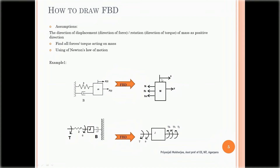For mass M, the force is applied in one direction and displacement X is in the same direction, so the inertia force F_M acts in the opposite direction. Since force is applied and X is in that direction, both K and D are extended, so they exert force outward from the body. Applying Newton's law: F equals M·d²X/dt² plus D·dX/dt plus K·x.